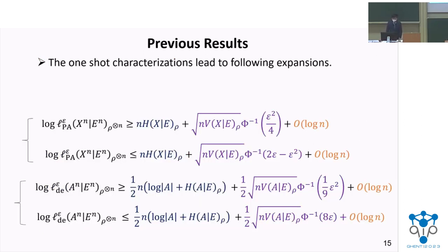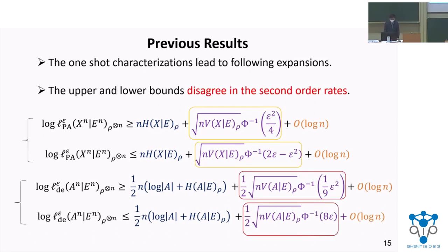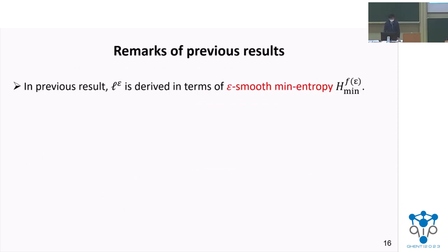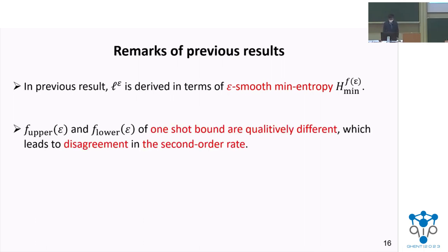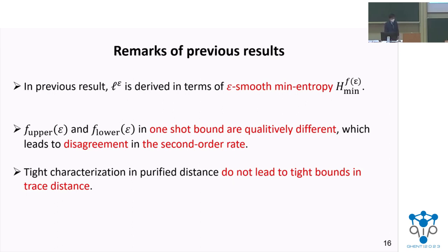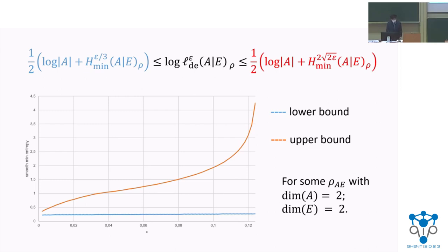For those previous results, their one-shot characterization can lead to the following second-order expansions. Note that the upper and lower bounds of their second-order expansion disagree in second-order rate. In those previous results, the operational quantity is derived in terms of smooth min-entropy, with the error parameter on the superscript being a function of error. However, the upper bounds and lower bounds of the error parameters of the one-shot bounds are qualitatively different, which leads to disagreement in second-order rate. Moreover, tight characterization in purified distance doesn't lead to tight bounds in trace distance. The disagreement of the error parameters may cause significant gaps even in the one-shot setting.